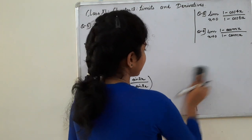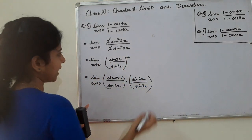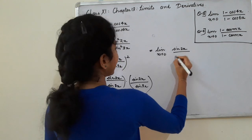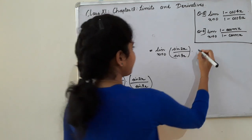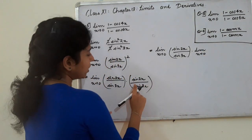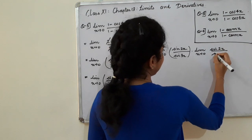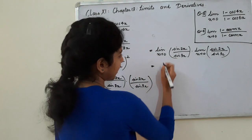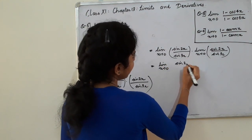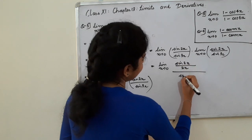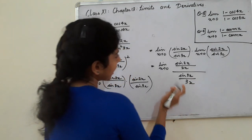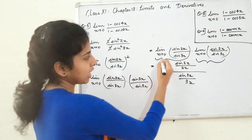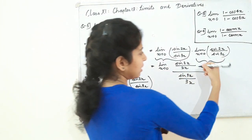Here we have sin square 2x divided by sin square 3x. This is already solved — we can solve it step by step. Limit extending to 0, sine 2x, with 2x reducing. This is the value, this is the answer — it is the value of the same limit.